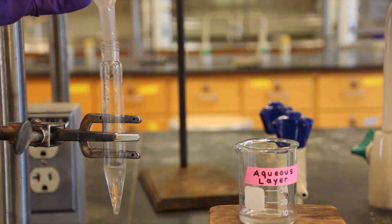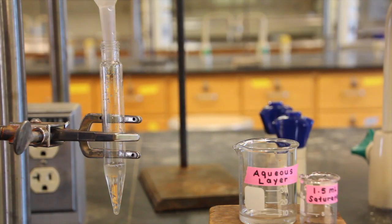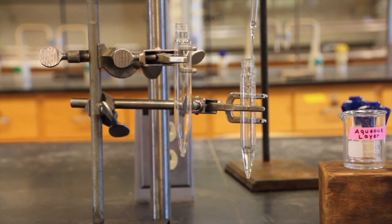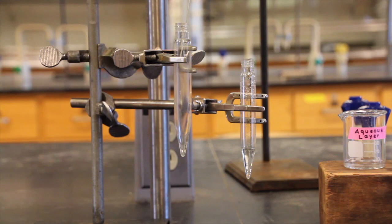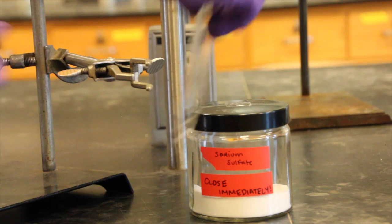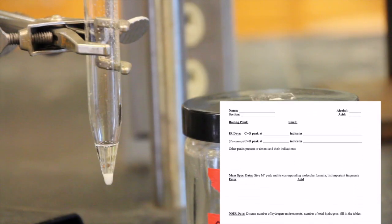Finally, wash the organic layer with 1.5 milliliters of cold saturated sodium chloride solution. Use a fresh pasture pipette to transfer the organic product to a clean, dry centrifuge tube. After you've dried the product using anhydrous sodium sulfate, analyze and confirm the synthesis of your ester.